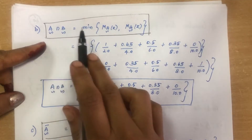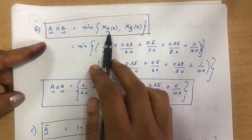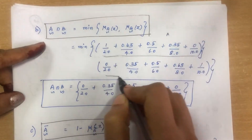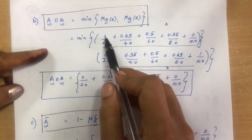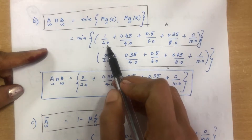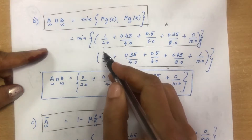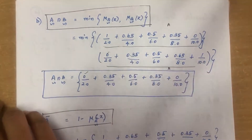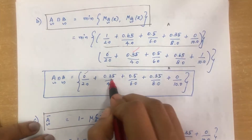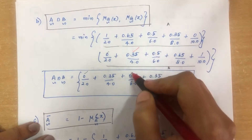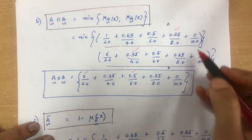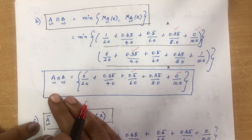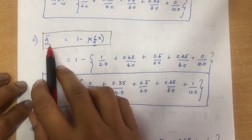For A intersection B, the formula is: minimum of (membership value of A, membership value of B). Comparing: for 2.0, min(1, 0) = 0, so 0/2.0. For 4.0, min(0.65, 0.35) = 0.35. For 6.0, min(0.5, 0.5) = 0.5. For 8.0, min(0.35, 0.65) = 0.35. For 10.0, min(0, 1) = 0. This is the output for A intersection B.